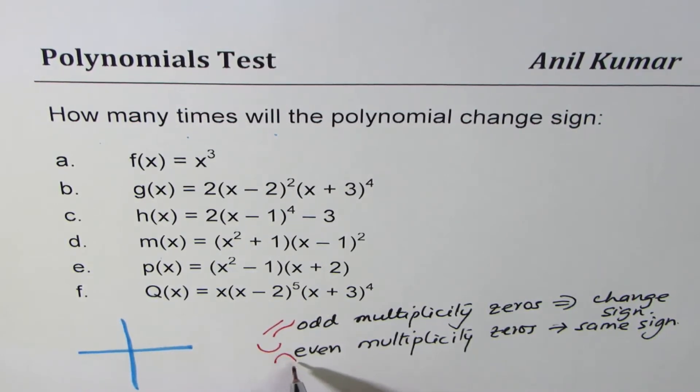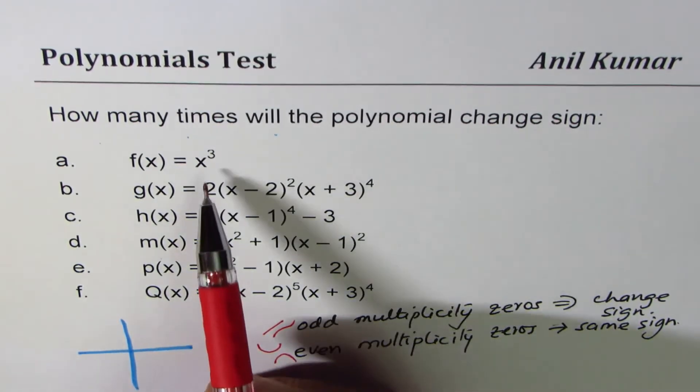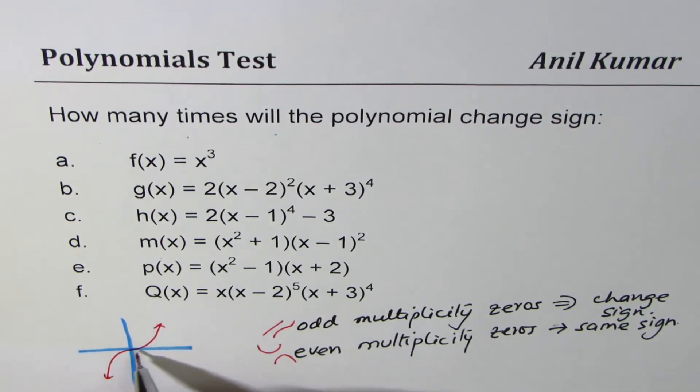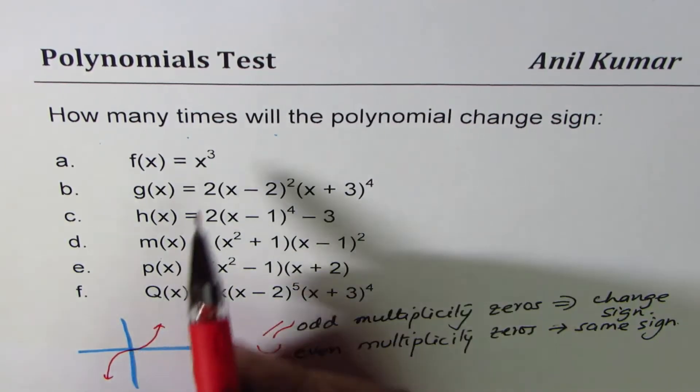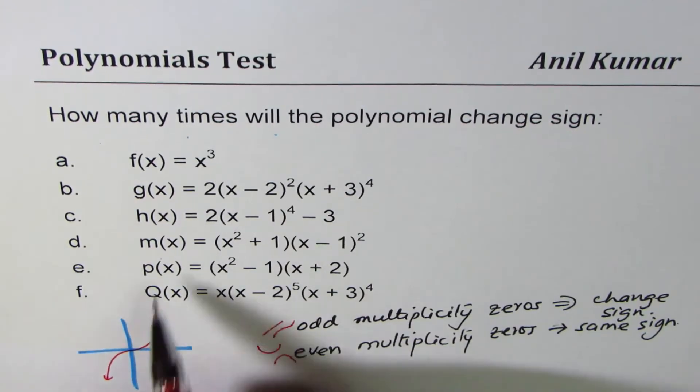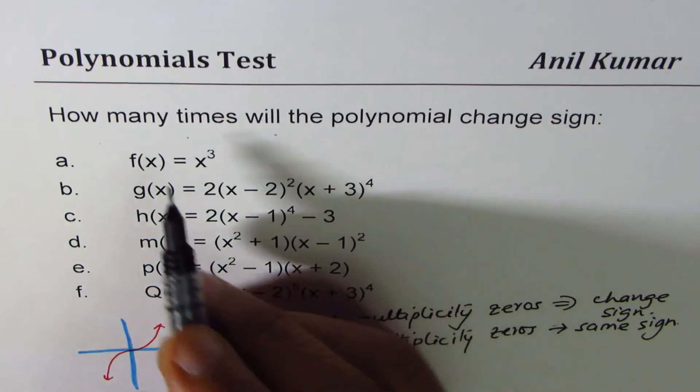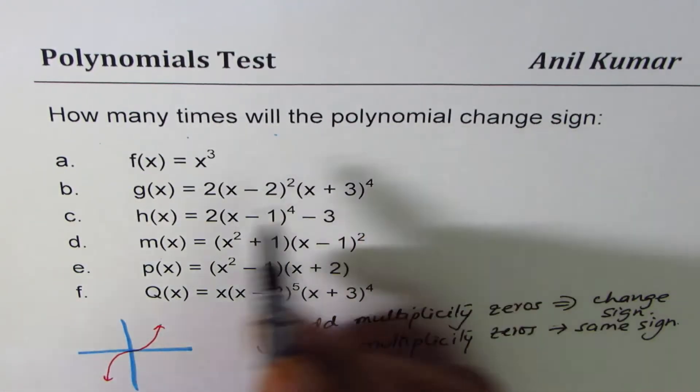x³ for example is a function like this. Do you see it changes sign at x equals zero, which is at zero? So it changes signs once. We can write this: for x³ it will be once.